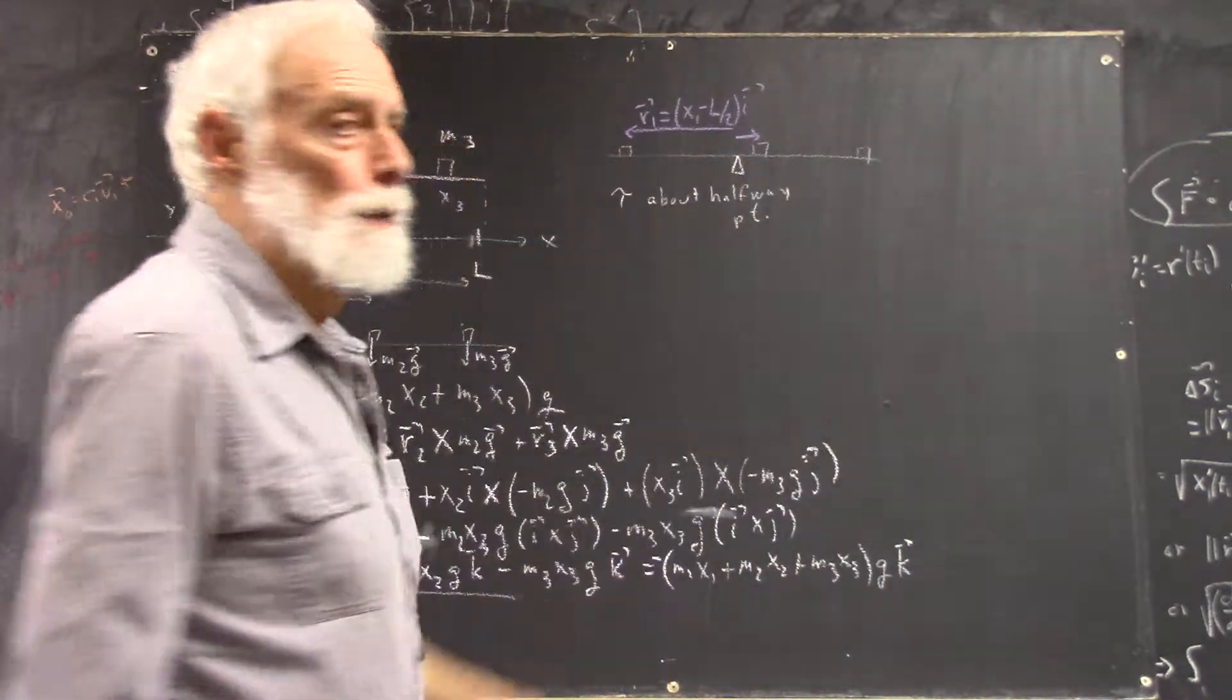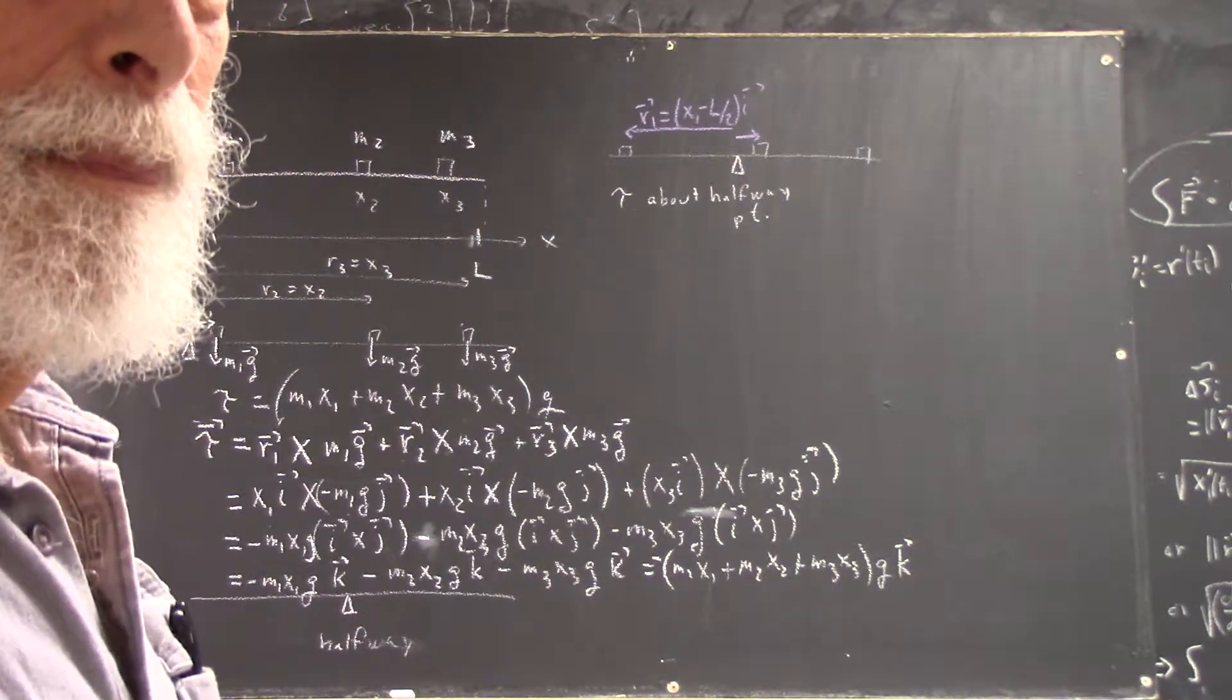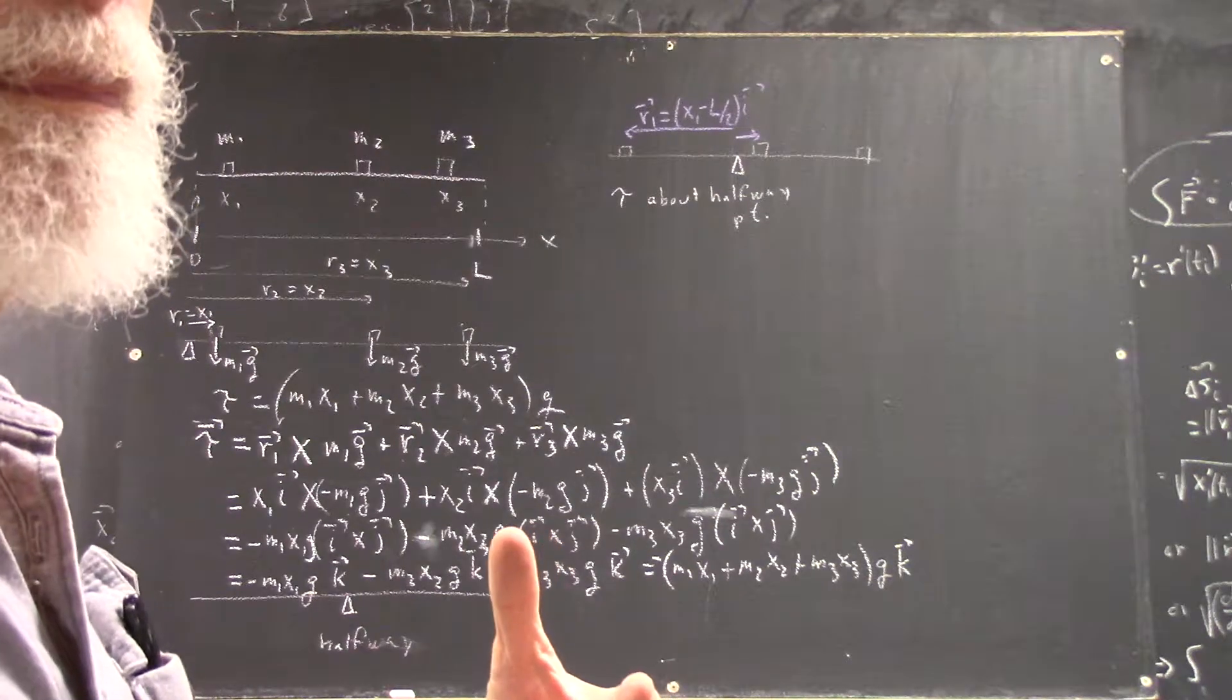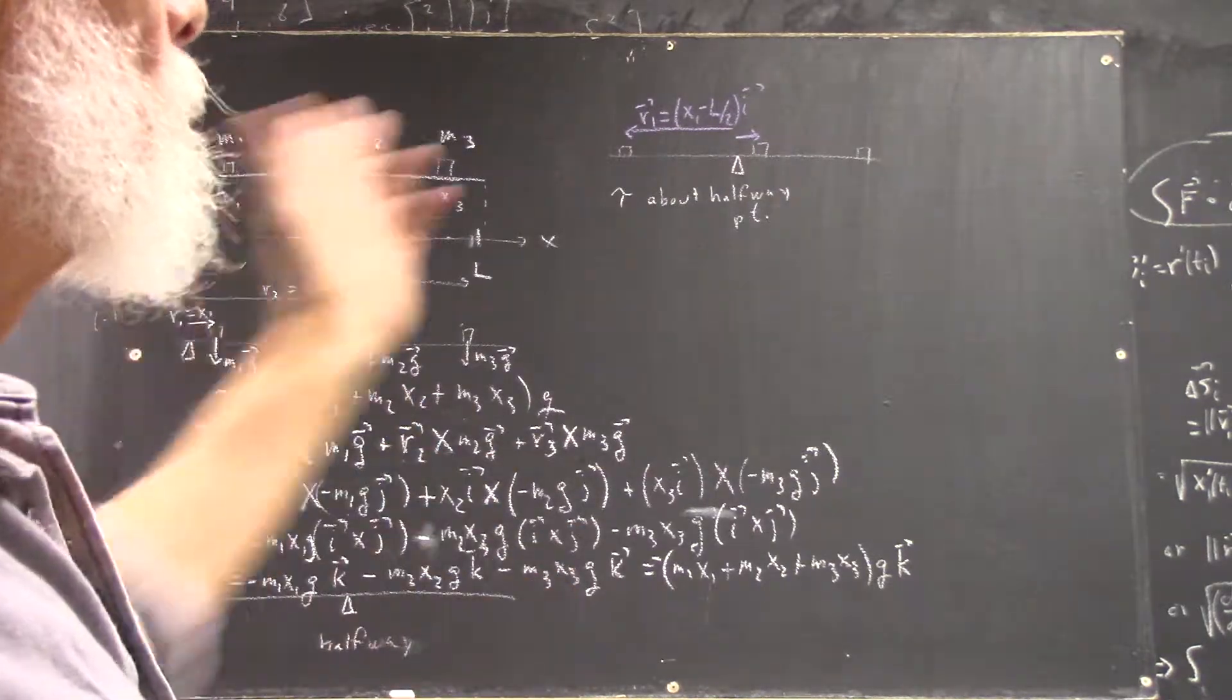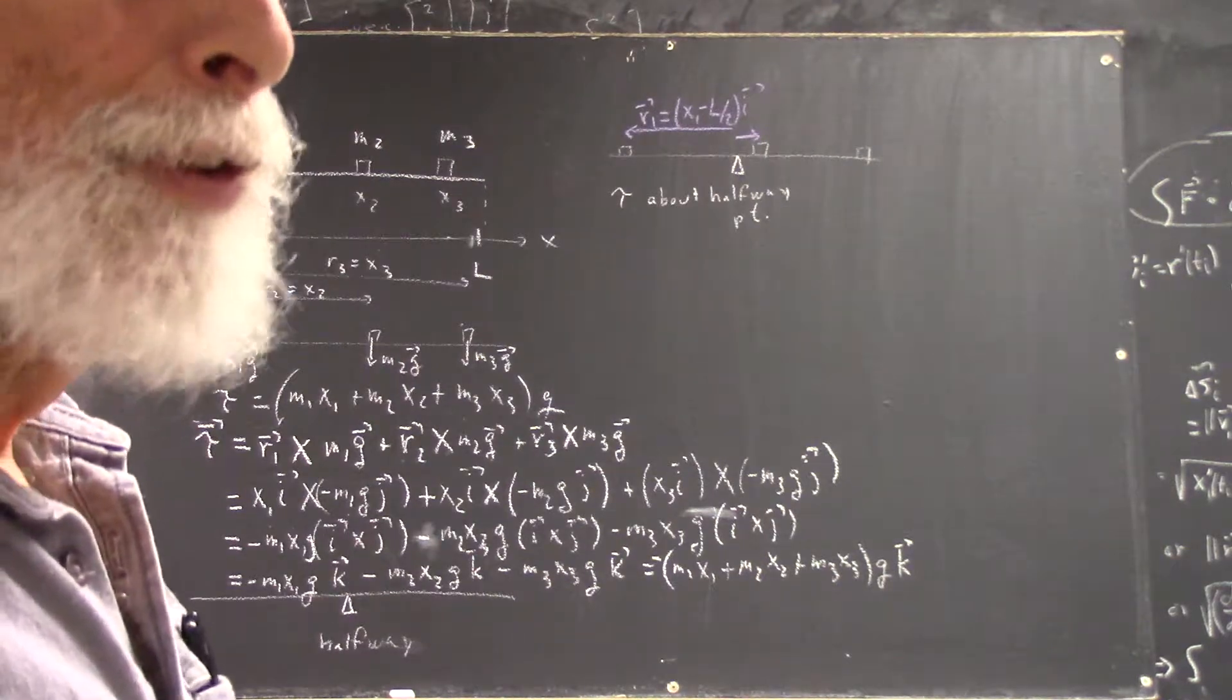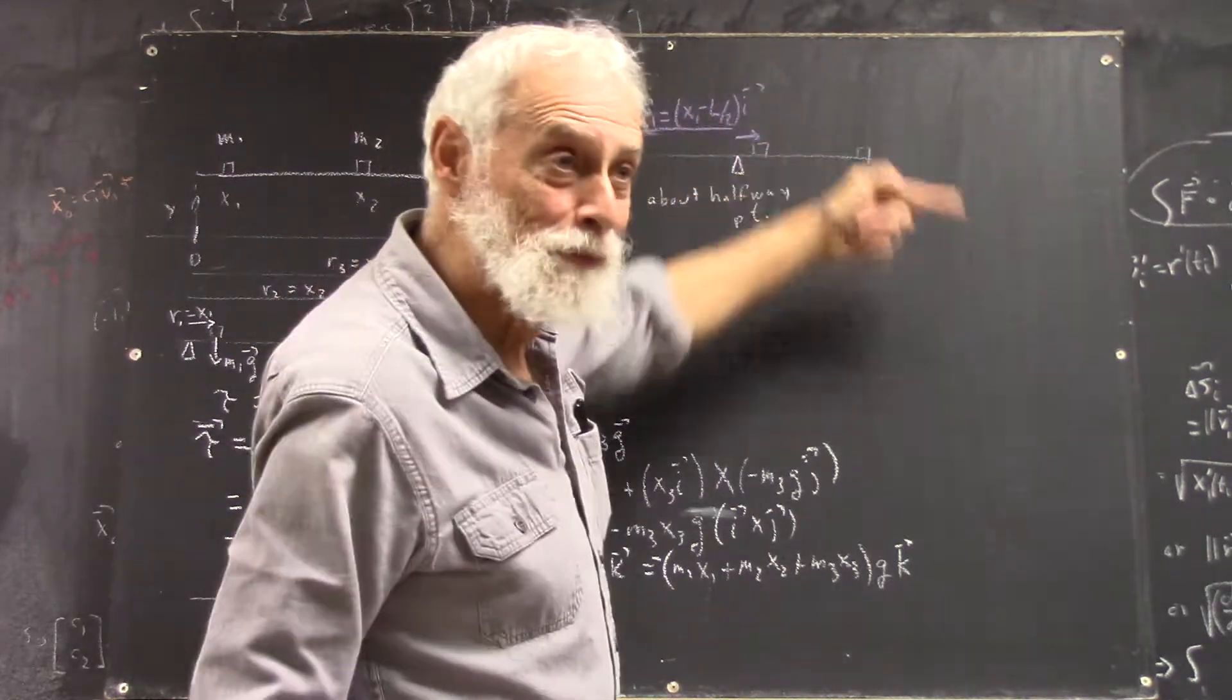R2 is what? L over 2 plus... Again? L over 2 plus x2. L over 2 plus x2 is going to be... It's x2 minus L over 2. Yeah, it's x2 minus L over 2. You know? This minus this gives you this. Right?